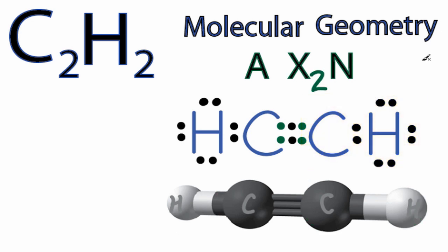And then N, that's the non-bonding electron pairs. Well, all of the electron pairs are involved in bonds. We have the triple bond, and then the single bond. So we don't need to really worry about N here. We'll just get rid of it.